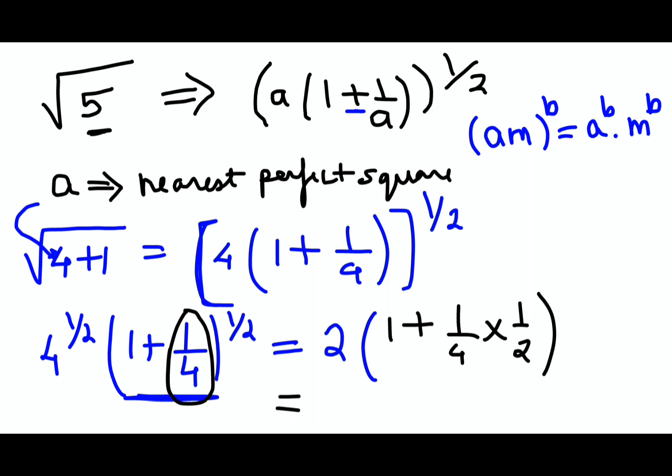So now what will happen over here is, let's take the 2 inside. So we'll have 2 into 1 is 2, plus 2 upon 4 into 1 by 2. So this is cancelling. So here we are getting 2 plus 1 by 4, that is coming out to be 0.25. So the final answer for root of 5 is nothing but 2.25. This is very very approximate, very close to your final answer. So I hope you understood how to find square root of imperfect squares.